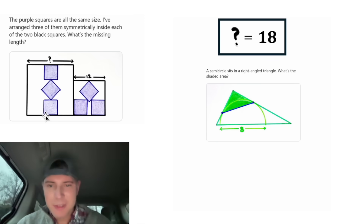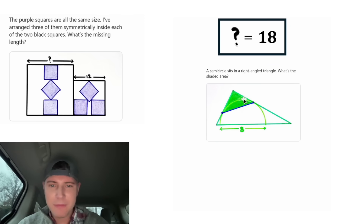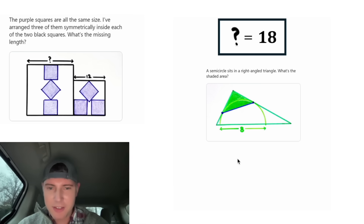Here's the next problem. It says a semicircle sits in a right-angle triangle. What's the shaded area? They're giving us that the diameter of the semicircle is eight. This one will be a fun one.